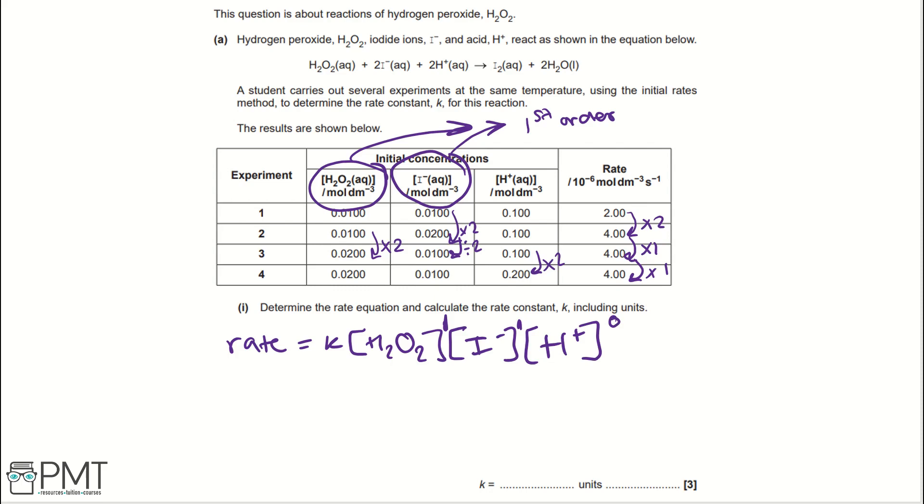Therefore, if we write the actual rate equation, we have rate equals K H2O2 I minus. And we ignore the H+, because H+ to the power of 0 is 1.